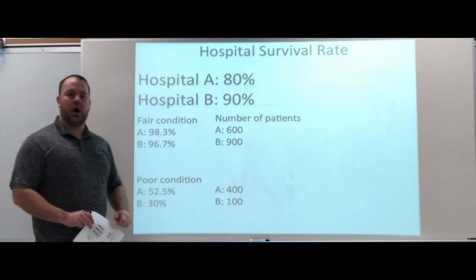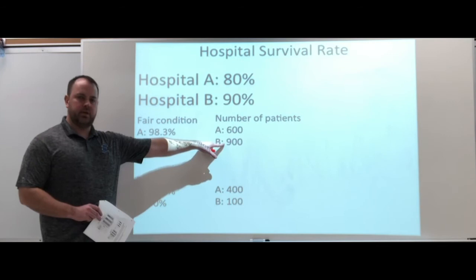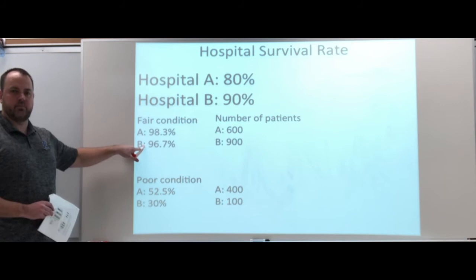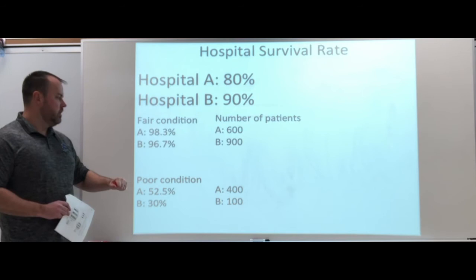Now here for the poor condition, we go to 400 and then only 100 for Hospital B. So you can see Hospital B here. 900 people. That's 90% of their patients are at the 96.7%. High volume, high percentage is bringing their overall up.